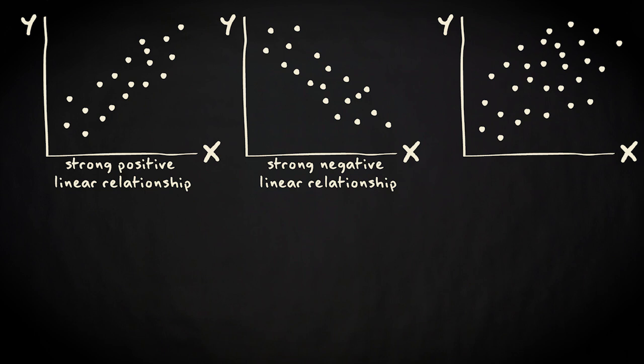In this graph, we also see a positive linear relationship. However, it is much less strong than the previous ones. We know that because the individual cases are much further removed from the line.